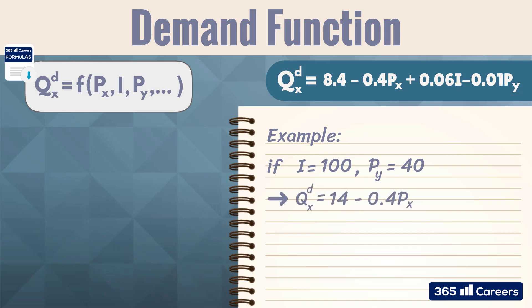q of x equals 14 minus 0.4 p of x. If we pay a bit more attention to the function, we can see that the higher the price is, the lower the quantity.